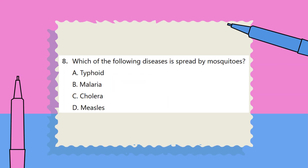Question 8. Which of the following diseases is spread by mosquitoes? A. Typhoid. B. Malaria. C. Cholera. D. Measles.